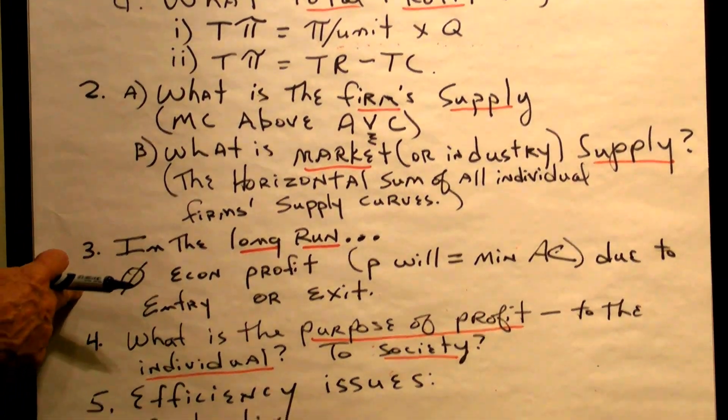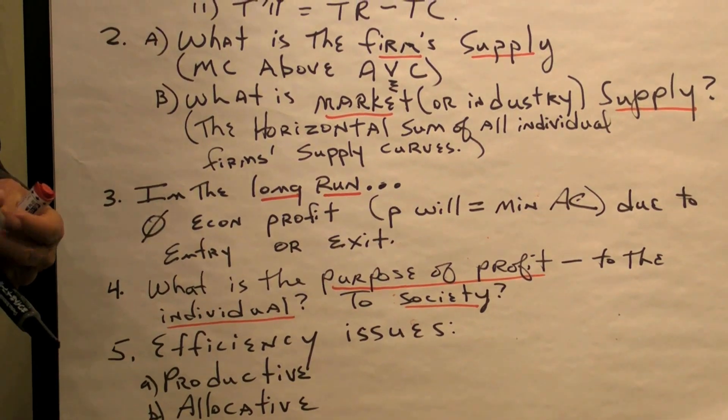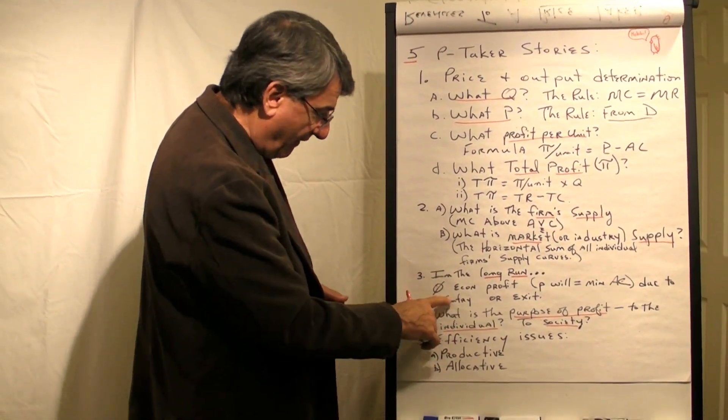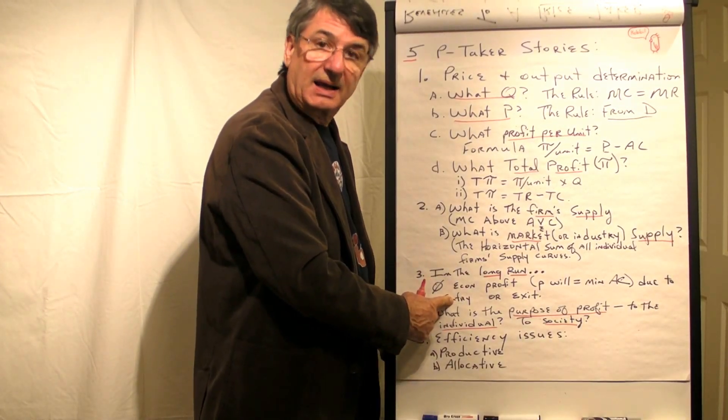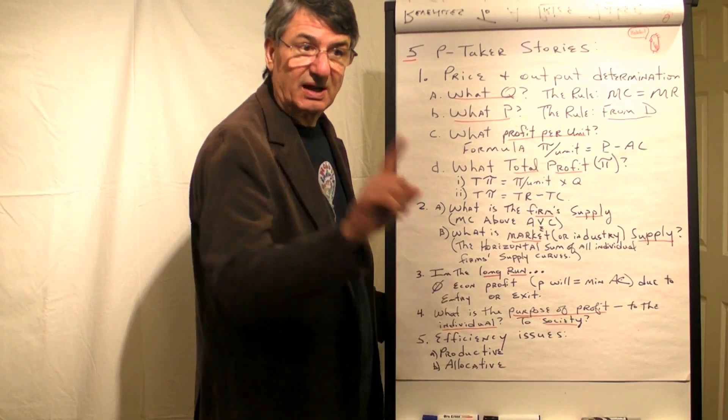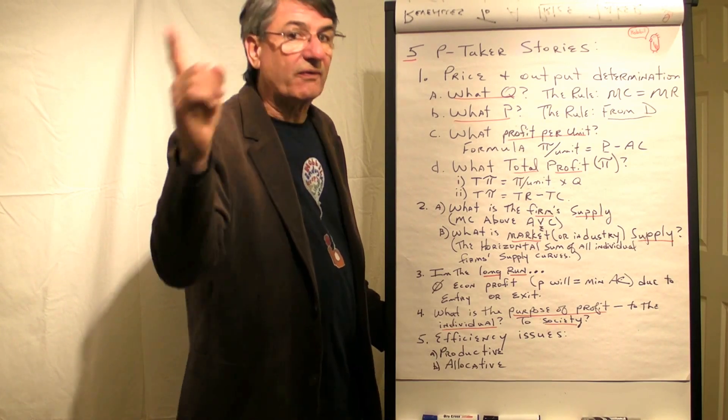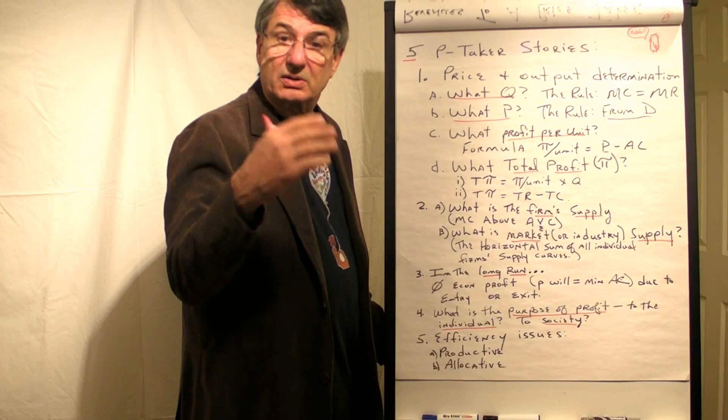What happens in the long run? That's the third story. In the long run, if you're a firm in pure competition, you can expect zero economic profit because if there are profits, there will be entry by other firms. If there are economic profits, profits above normal, it will attract other firms into this industry. The long run means time enough for new firms to come in and start producing or to exit.